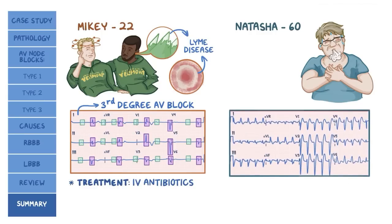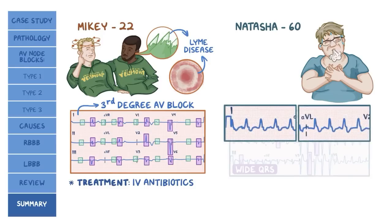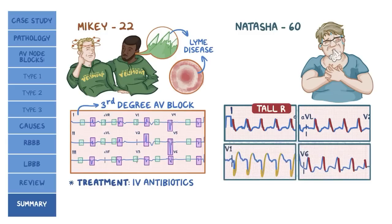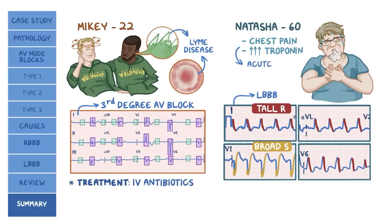Onto Natasha's ECG. First, we see that the QRS complexes are wide in all the leads, but that's not specific for anything. Looking closer at leads 1, AVL, and V6, we see those characteristic tall R waves. Also, lead V1 shows a broad S wave. These characteristics are indicative of left bundle branch block. Considering Natasha is presenting with chest pain and her troponin levels are elevated, this new LBBB may be indicative of an acute myocardial infarction.